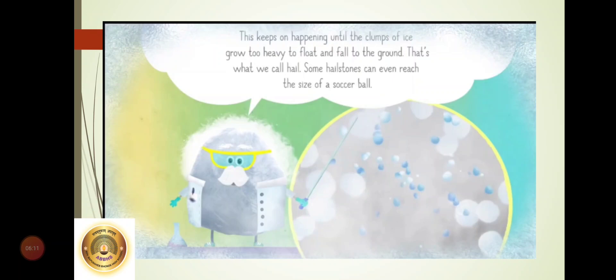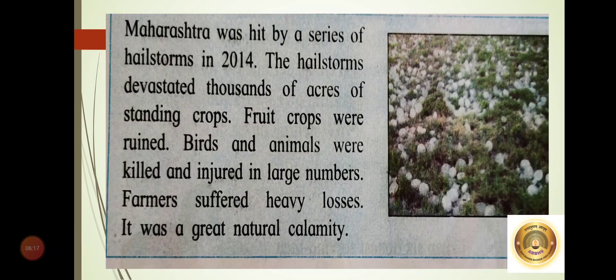Now, students, we go ahead with this chapter. Maharashtra was hit by a series of hailstones, that means a large amount of hailstones in the year 2014. The hailstones devastated, it means it destroyed thousands of acres of standing crops. Fruit crops were also ruined. Ruined means completely devastated, completely destroyed. Birds and animals were killed and injured in large numbers. Farmers suffered heavy losses.